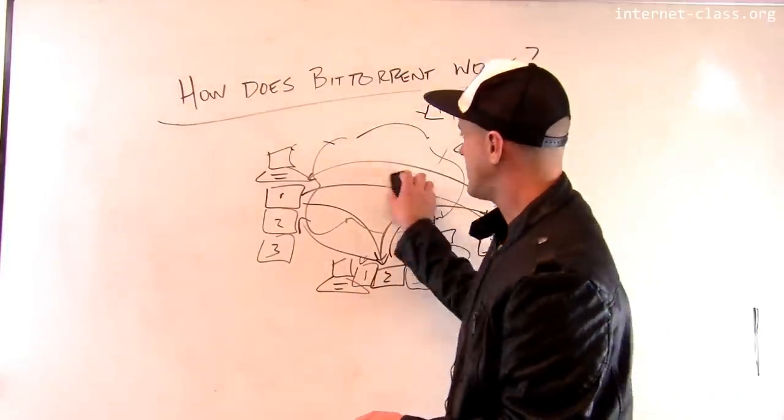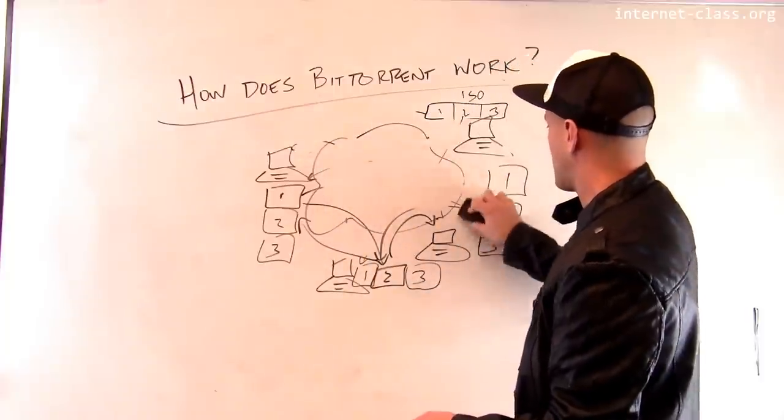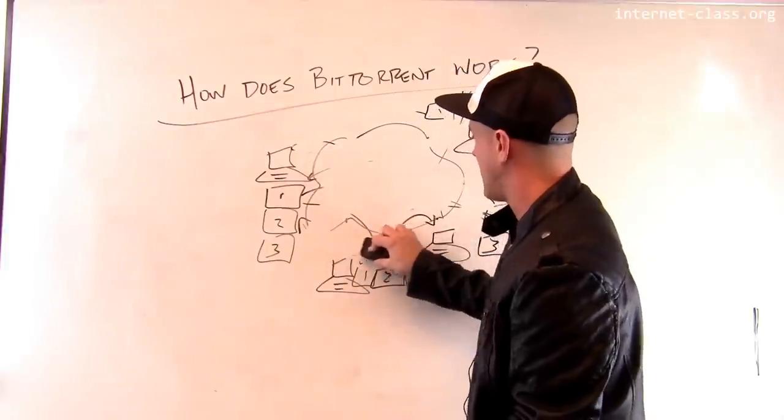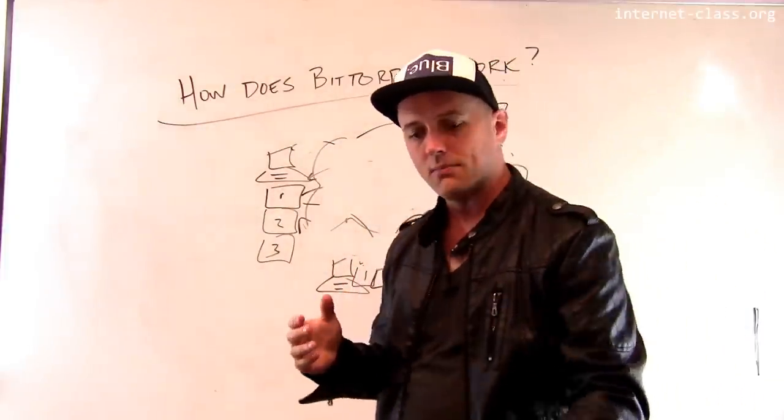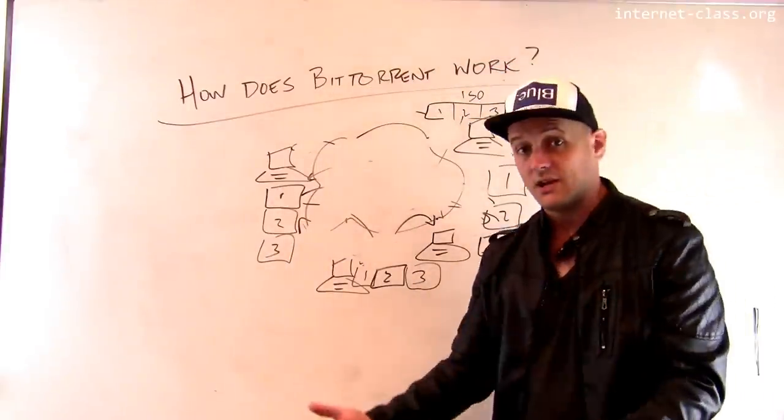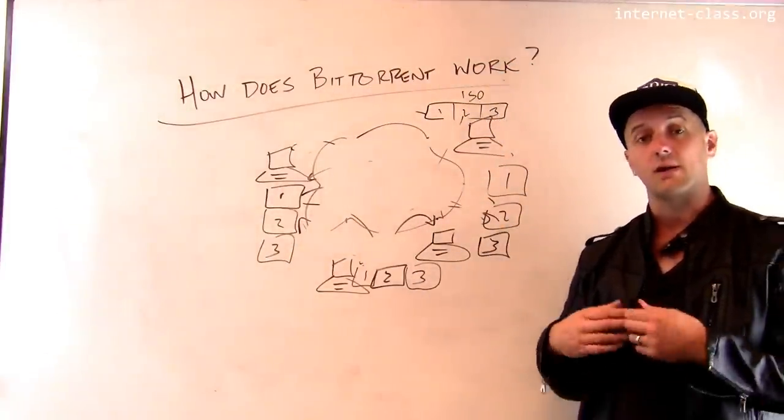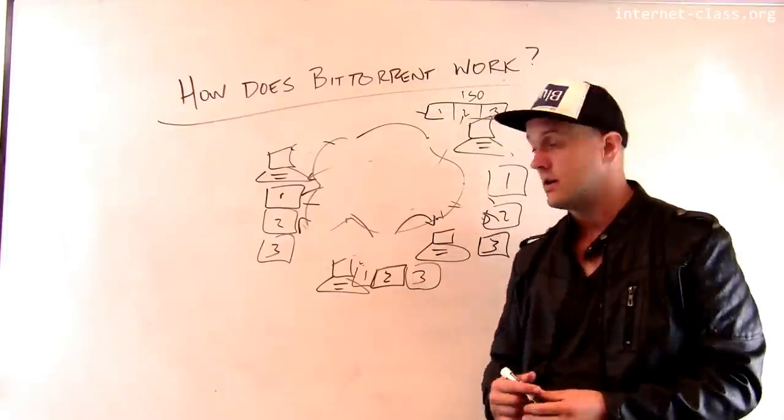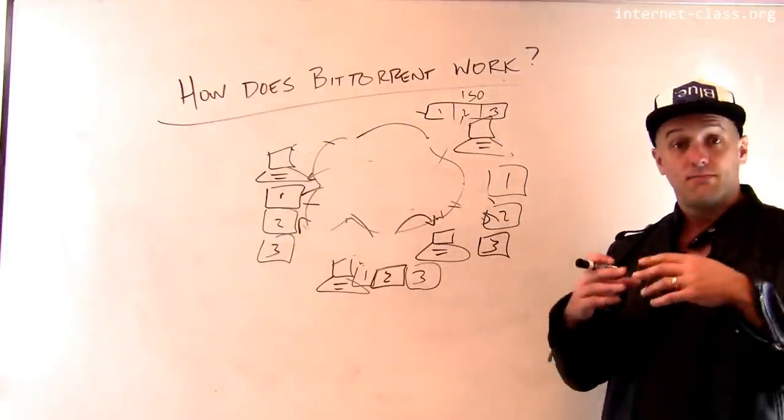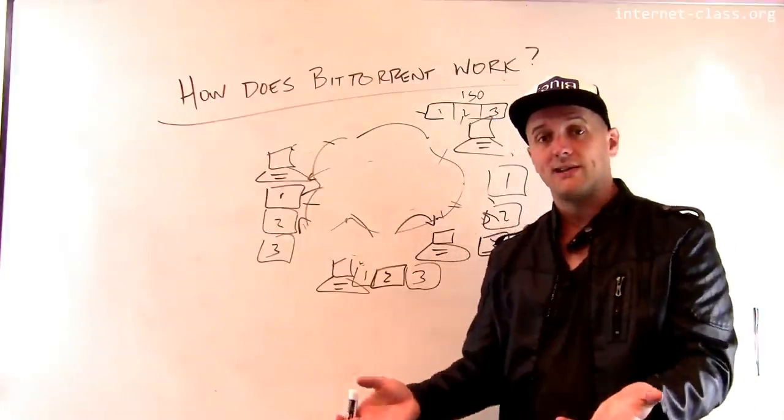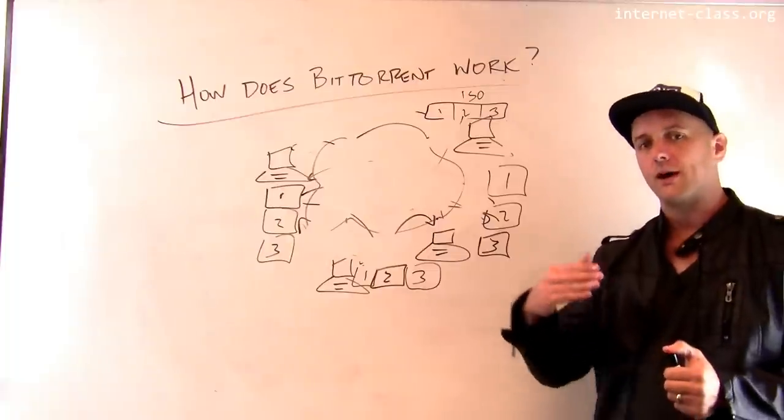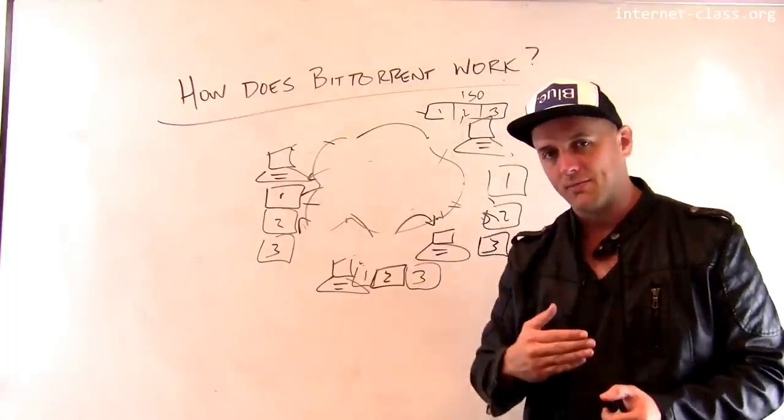The other thing that BitTorrent takes advantage of or exploits is this property that's known as upload-download asymmetry. And this is particularly important for computers that are connected to the internet over residential internet connections like through a cable connection or a DSL connection. Because frequently those connections are configured and you can find this out at home. You can run a speed test and you can see this. This is why speed tests that you run will test both the upload bandwidth and the download bandwidth separately.